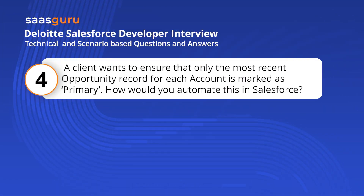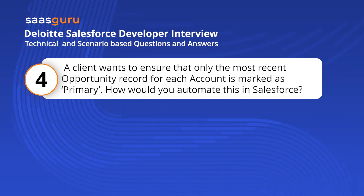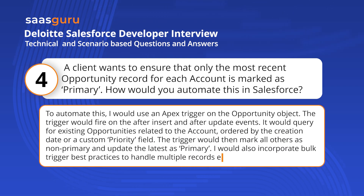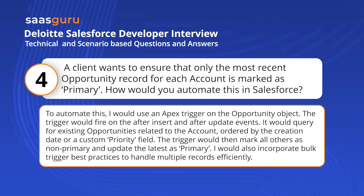An example of the Singleton pattern in APEX would be demonstrated as follows. A client wants to ensure that only the most recent opportunity record for each account is marked as primary. To automate this, I would use an APEX trigger on the opportunity object. The trigger would fire on after insert and after update events, query for existing opportunities related to the account ordered by creation date or a custom priority field, then mark all others as non-primary and update the latest as primary.